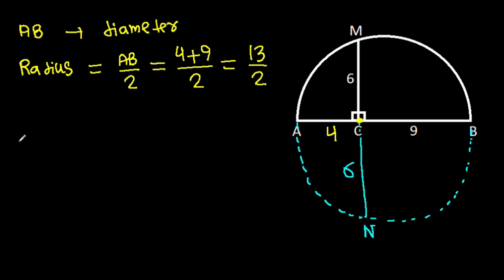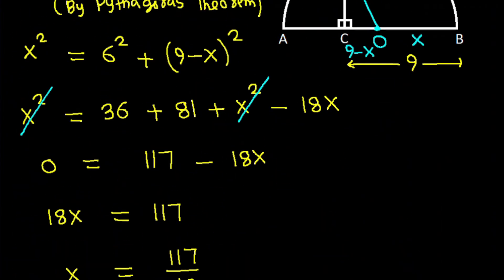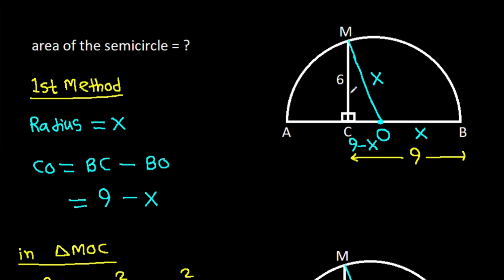And area of semicircle will be pi times 13 over 2 squared over 2, that will be 169 pi over 8. It is 169 pi over 8.